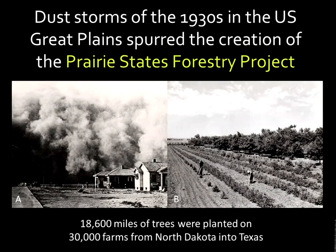In the U.S., we've also seen agroforestry brought into institutions and even into the government. In the 1930s, there were dust storms — you've probably heard of the Dust Bowl that occurred in the Great Plains because the soils were uncovered and there were wind storms across those zones. This inspired what they called the Prairie States Forestry Project, an enormous effort to integrate windbreaks across vast areas of land. In fact, 18,000 miles of trees were planted on 30,000 different farms from North Dakota into Texas.